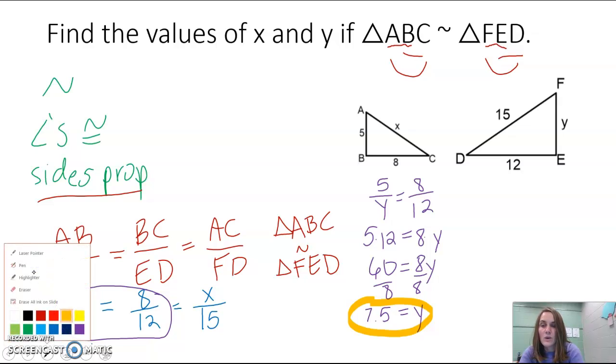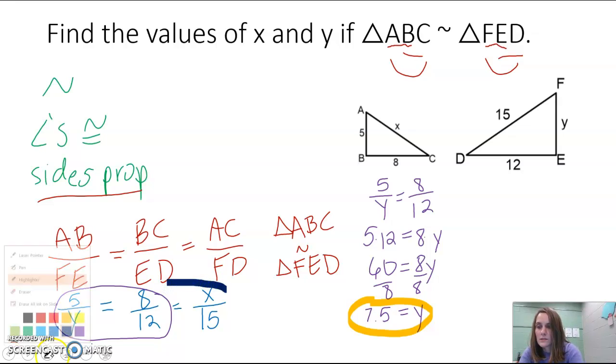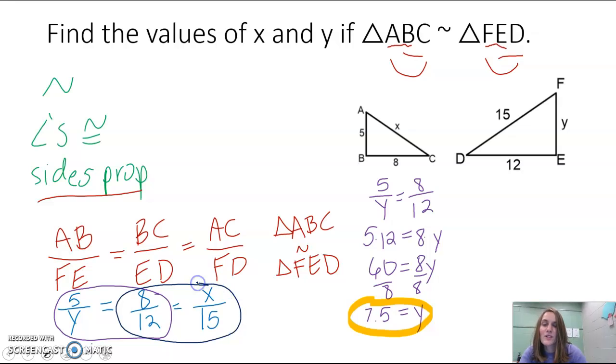And then to do our second one, we're going to look at trying to solve for X. Which means we're going to create a second equation using our X over 15 ratio with 8 over 12. We don't want to use the X over 15 ratio with 5 over Y, because we don't want to put our two variables together in the same equation. We want them to be separate equations. So I have another equation, 8 over 12 equals X over 15.